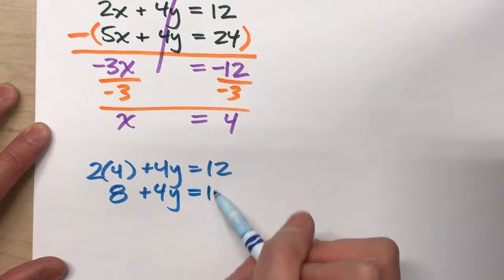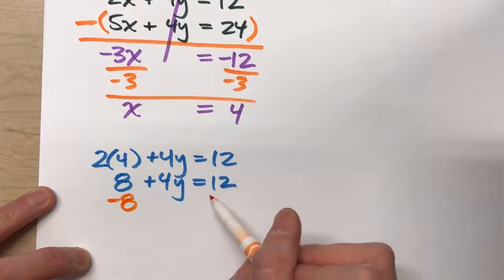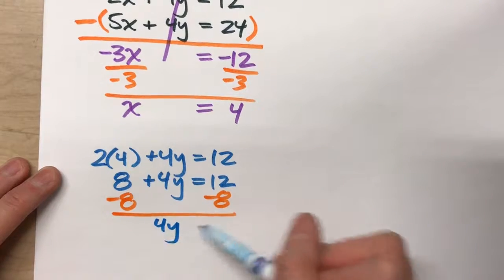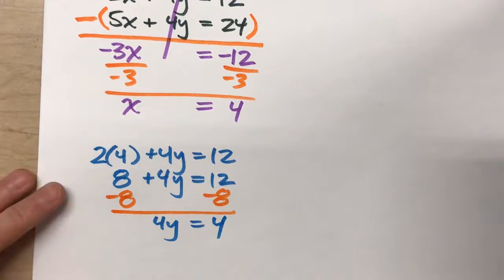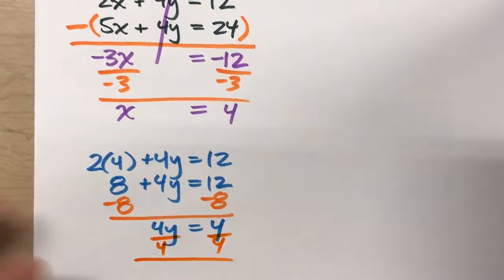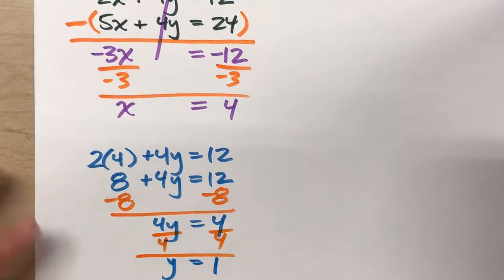So I'll subtract 8 from both sides. I'll end up with 4y equals 4. Divide both sides by 4. And I get y equals 1.